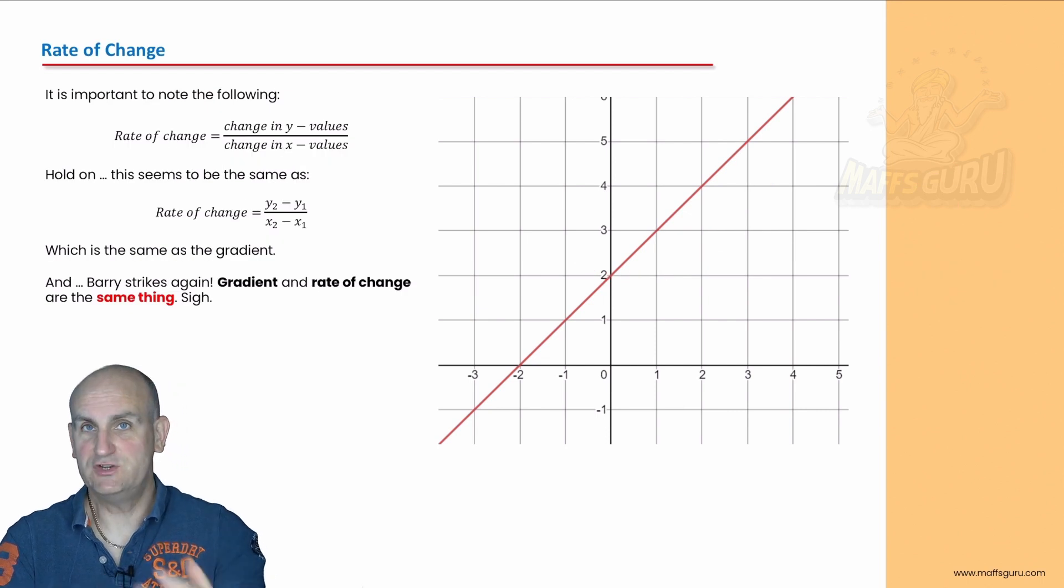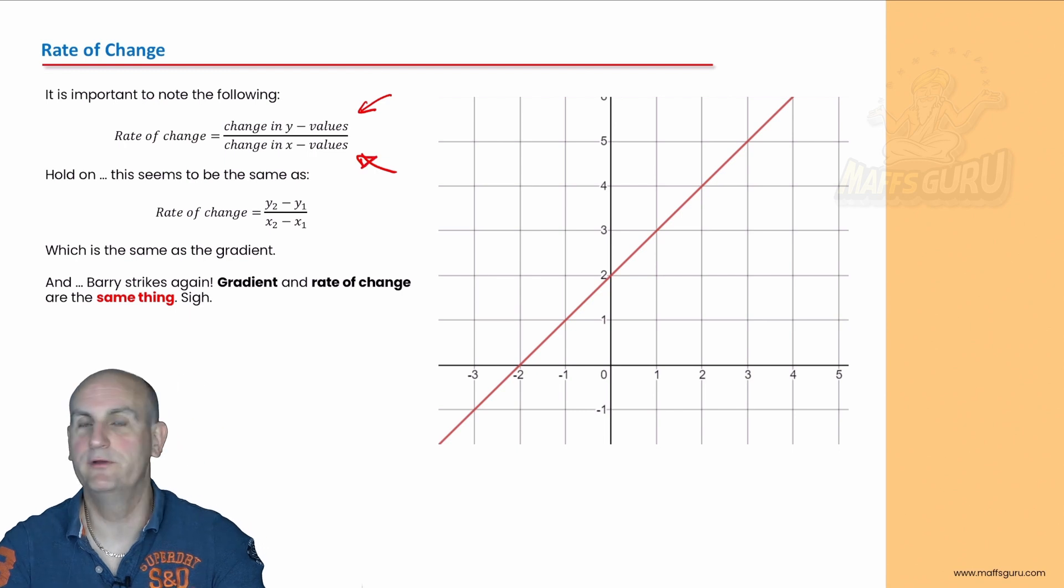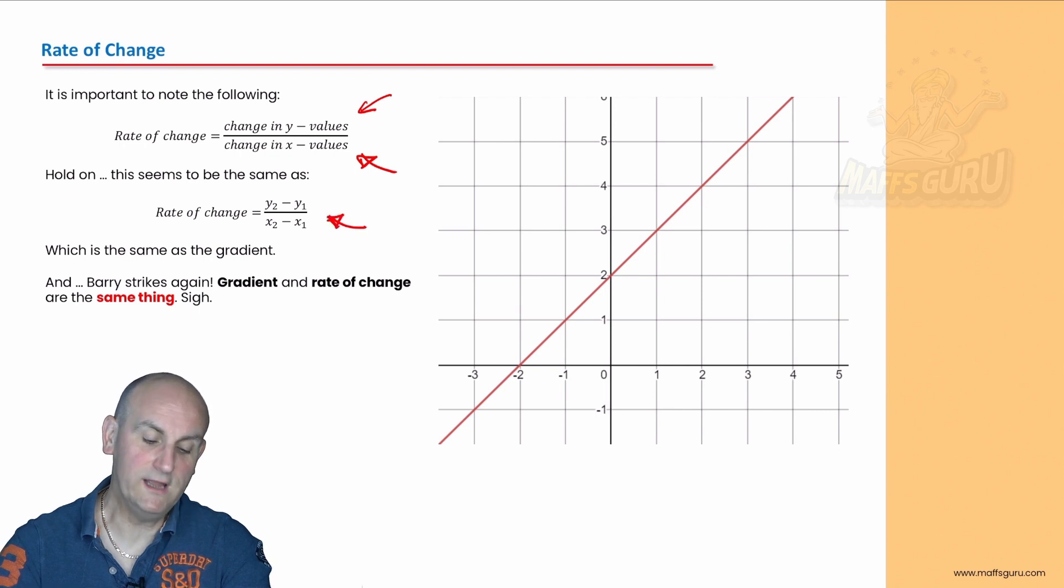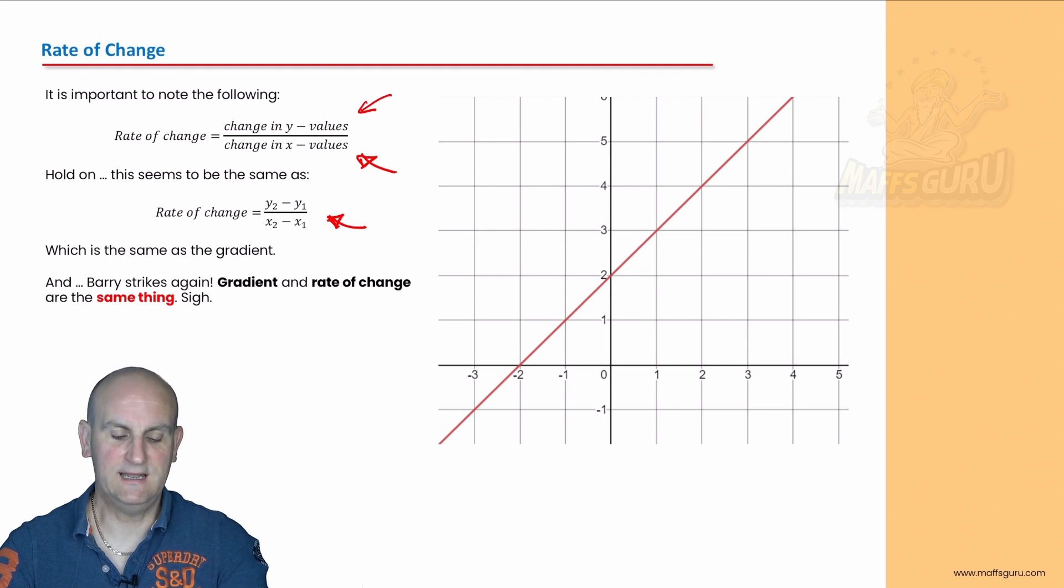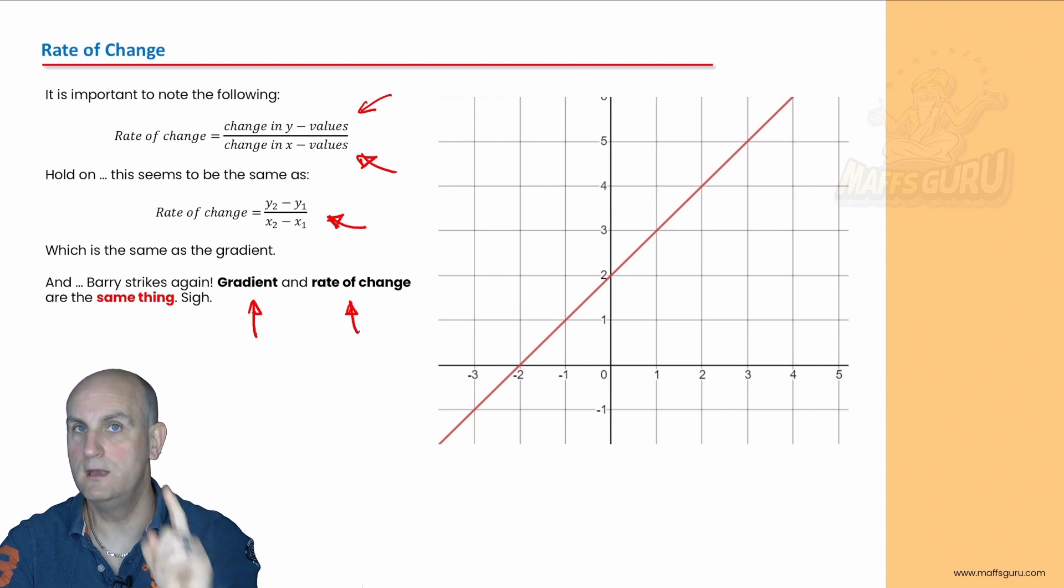A rate of change is defined, a very mathsy term, as a change in Y values divided by a change in X values. Hold on a moment, isn't that just what gradient is? Look, if we were to write it out as Y2 minus Y1 over X2 minus X1, what do we see? We see that that is actually the formula for gradient. So spoiler, the gradient and the rate of change are exactly the same number wise.